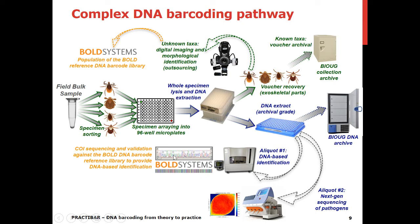Based on the results of the barcoding protocols, known taxa will be sent for storage in the archive, while the unknown taxa — the unknowns — will be imaged and outsourced for morphological identification. Their sequence will become part of the reference library once a taxonomist puts a species name on those specimens.